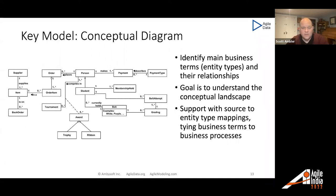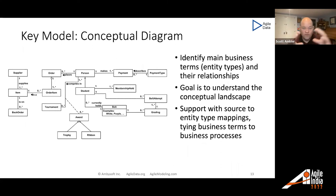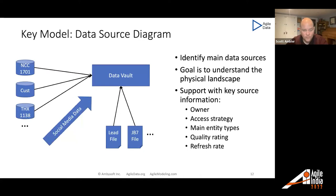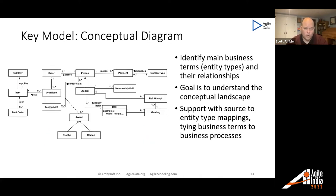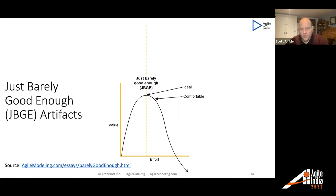I also want to start doing some conceptual modeling — identify the high-level entity types, where they come from, and start mapping where I'm getting person data, student data, and so on. I don't need to know all 50 data elements behind students now; I can get those details later when I actually need the data. I need a physical overview through the data source diagram and a logical overview as well. The details will come out over time as we implement vertical slices. My models need to be just barely good enough.